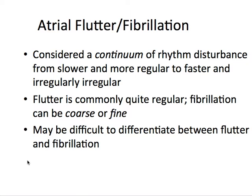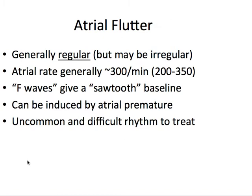It's kind of difficult to differentiate between the two, but as long as you can tell that something's not normal, you're able to identify that this person needs to be treated. Atrial flutter is generally regular but can also be irregular. The atrial rate is usually around 300 per minute, meaning the atria are contracting 300 times per minute, compared to atrial fibrillation where they're going around 450 to 500 times a minute.